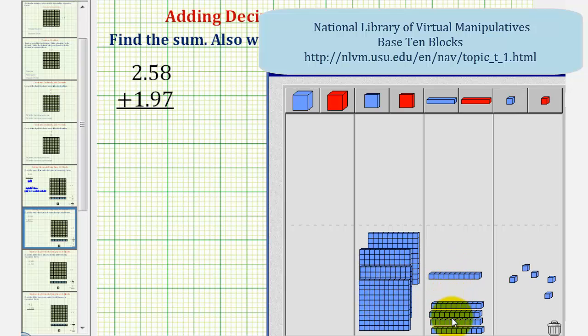Now we have a total of one, two, three, four, five longs, or five-tenths. Looking at the ones place value, we have four flats, so we have four ones.